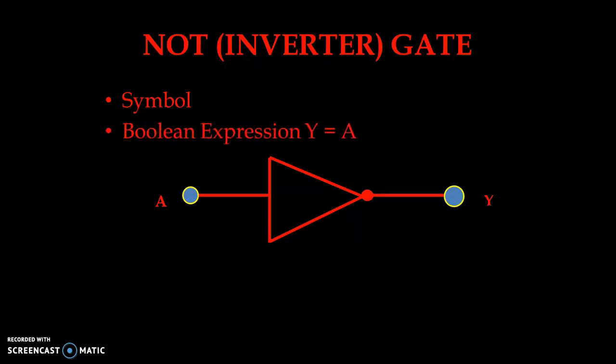Now we see the boolean expression for the NOT gate. Output Y is equal to A-bar — that is inverted — meaning when we apply a low signal at the input, at the output we will be getting a high signal. And the opposite is also true: when we apply a high signal at the input we get low at the output. Now let us see the truth table.